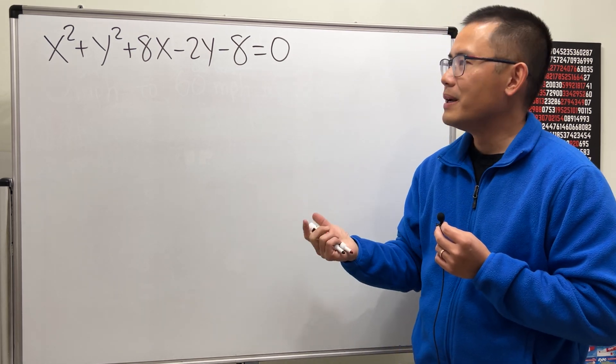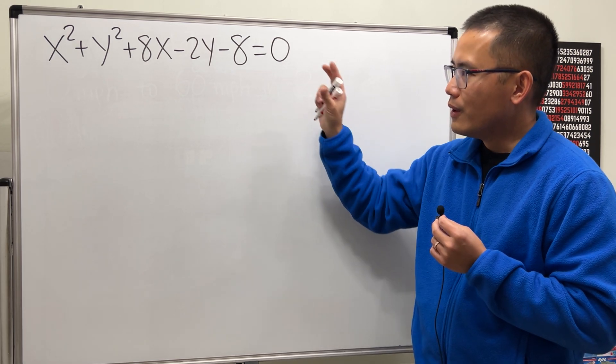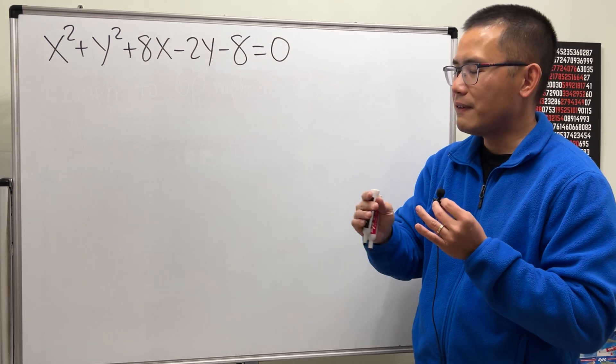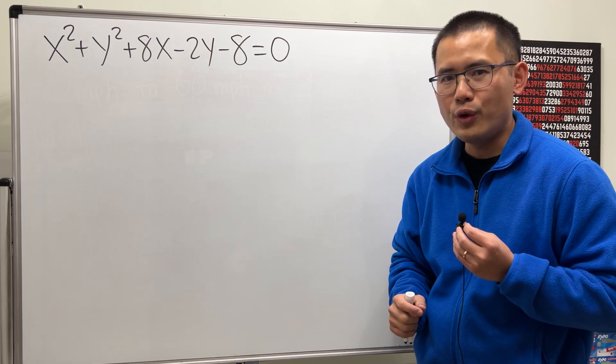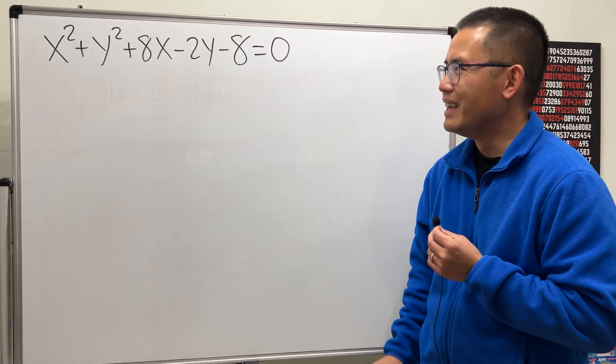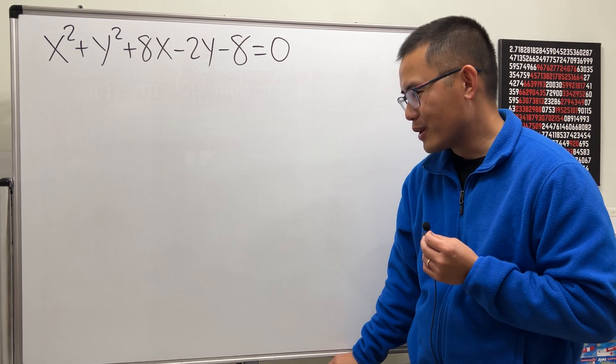I will tell you, it's a circle. But in order to realize that it's a circle and find its center and its radius, we will have to complete the square, not just once, but twice. So let me show you how it goes.